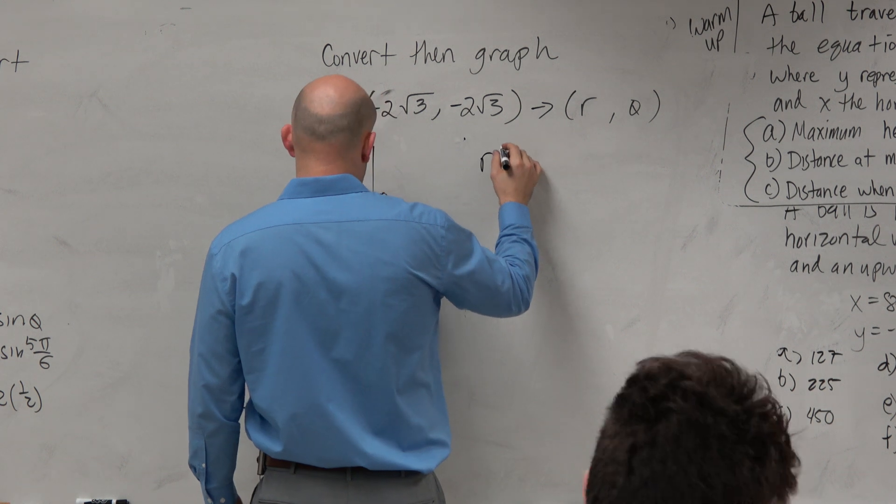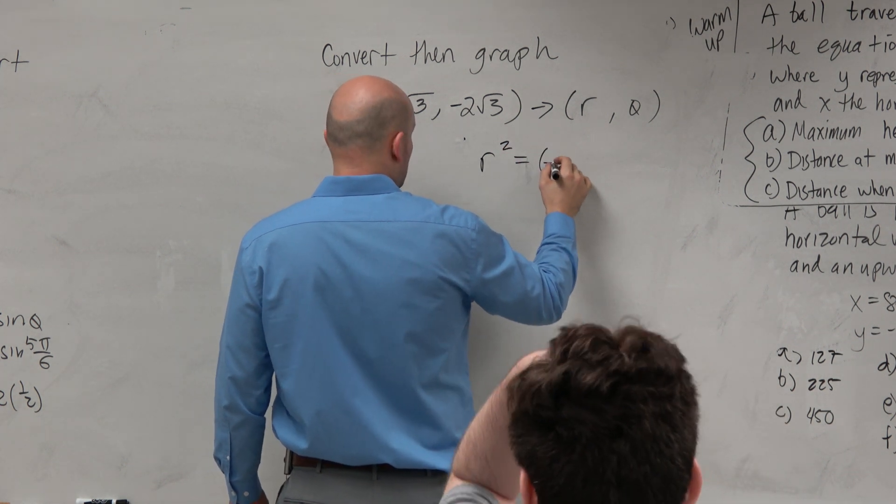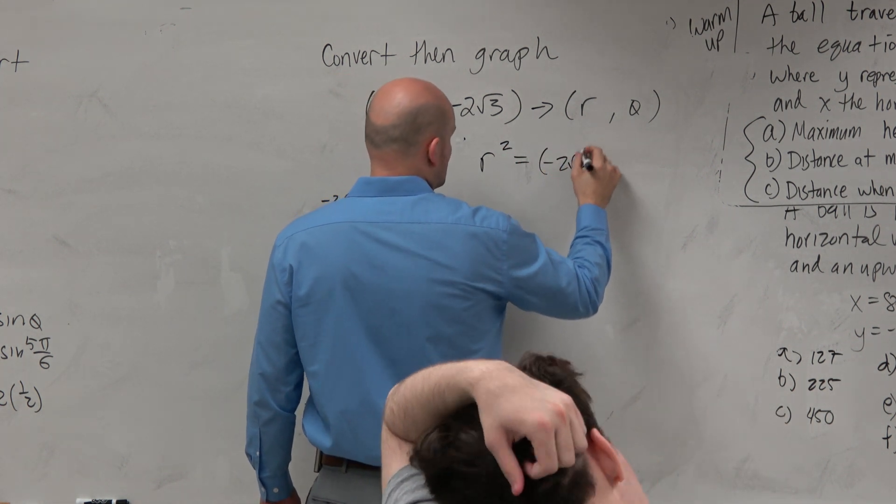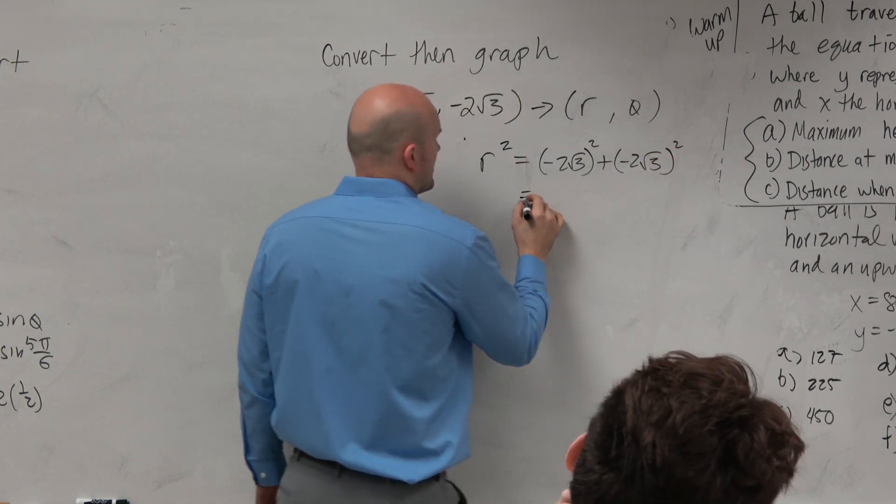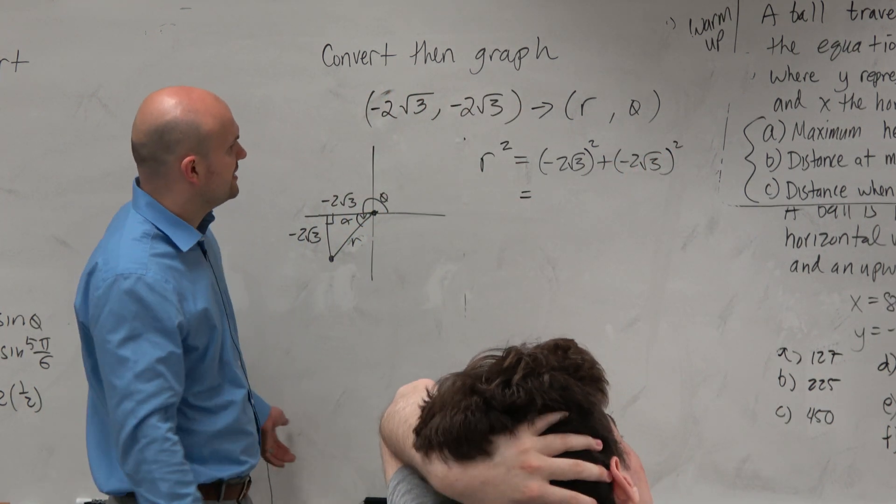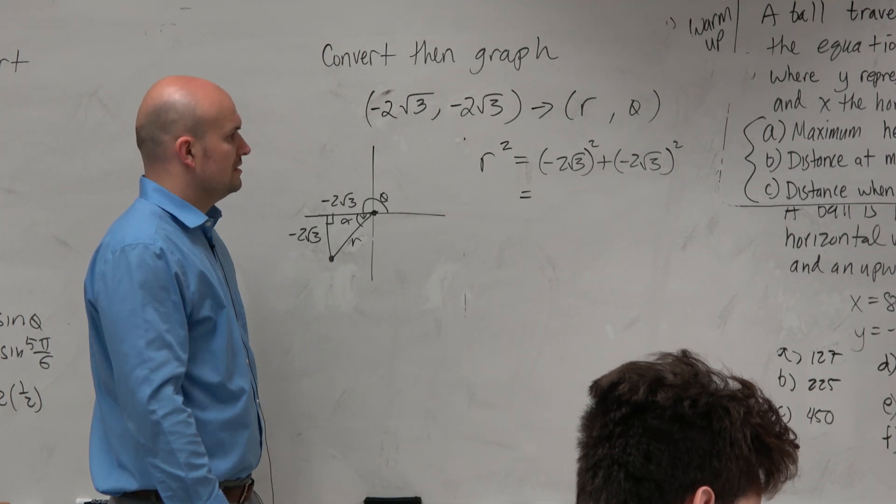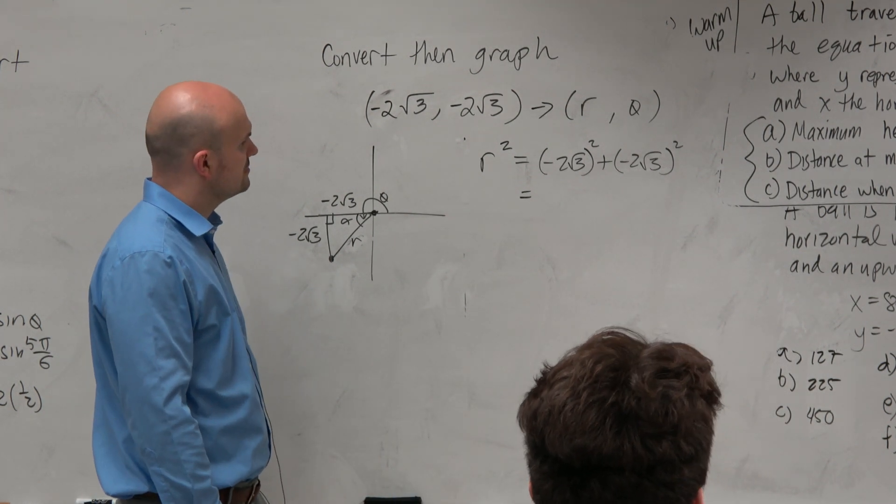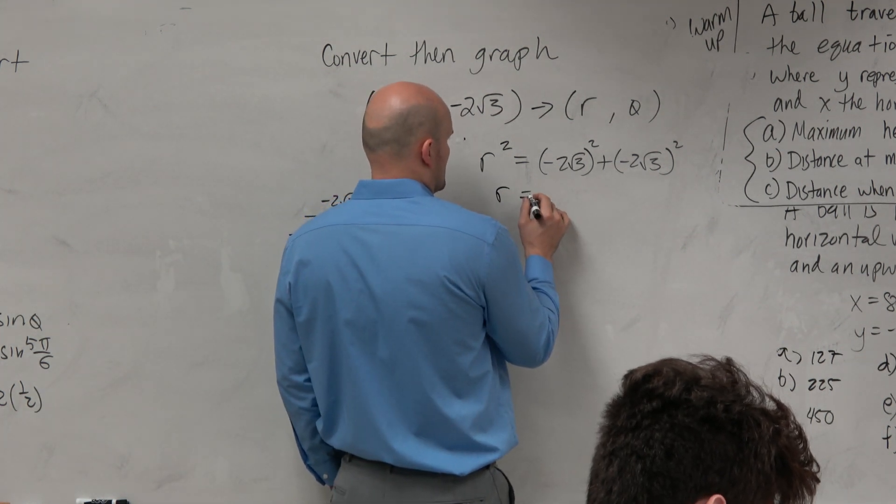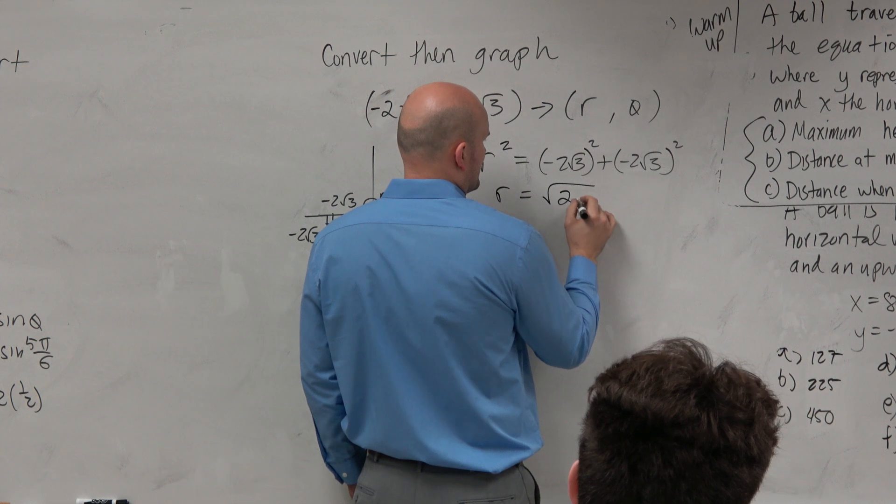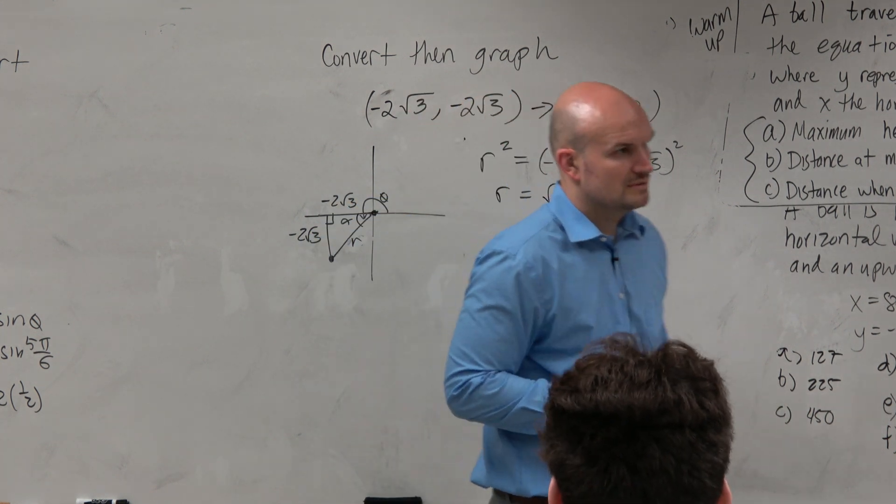So r squared is equal to negative 2 square root of 3 squared plus negative 2 square root of 3 squared. So that's going to be 4 times 3, so that's square root of 24. Or sorry, r is equal to square root of 24.